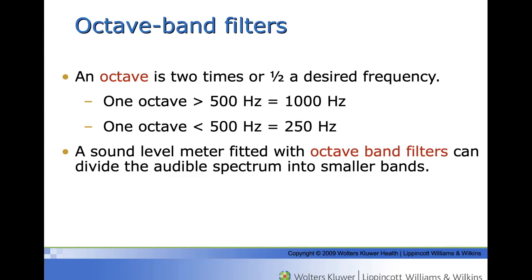A sound level meter fitted with octave band filters has the ability to split the audible spectrum into smaller bands identifying the frequency content of the noise. These are called the octave bands because there is one octave between the bottom and top of each band.